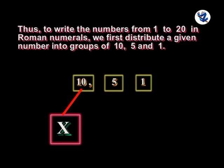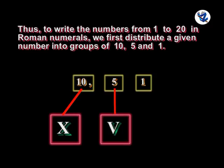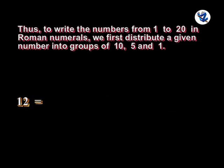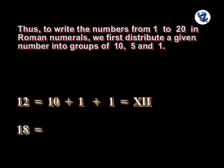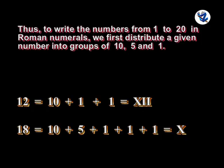To write numbers from 1 to 20 in Roman numerals, we first distribute a given number into groups of 10, 5, and 1 — that is X, V, and I. Thus, 12 is equal to 10 plus 1 plus 1, which is XII, and 18 is equal to 10 plus 5 plus 1 plus 1 plus 1, which is XVIII.